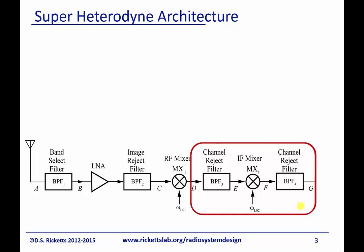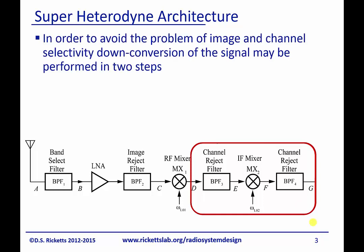The SuperHeterodyne architecture is looking to solve an important problem of the image and channel selectivity in the down conversion. And if you remember from the previous module, we talked about the trade-offs of a high and low IF. The SuperHeterodyne basically adds an additional down conversion stage in order to try to separate this constraint so that you can optimize for both image rejection and channel selectivity.